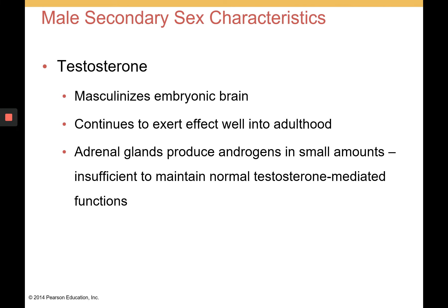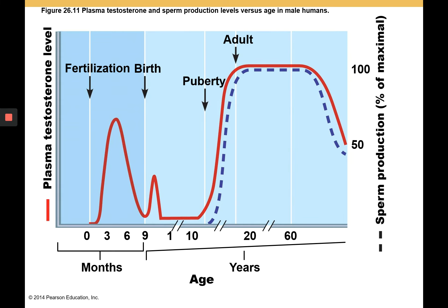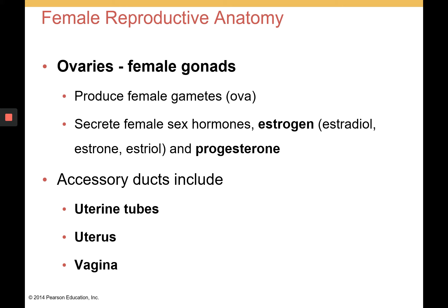Testosterone also masculinizes the embryonic brain and continues to exert masculinization effects well into adulthood. The adrenal glands can produce androgens in small amounts, but this is insufficient to maintain normal testosterone-mediated functions, so it is really the testosterone produced by the testes that masculinizes both the male body and brain. A surge of testosterone occurs after fertilization and before birth, a small surge after birth, another surge at puberty reaching adult levels for a number of years, before declining after about age 70 to 80.